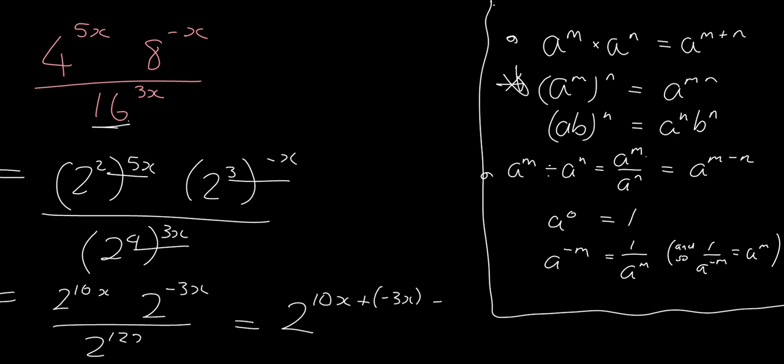And so you're going to get 10x plus minus 3x minus, oh sorry, I left off the x here, minus the 12x. This was an x, 4 times 3x is 12x. So it's 10x plus minus 3x, and then subtract 12x.